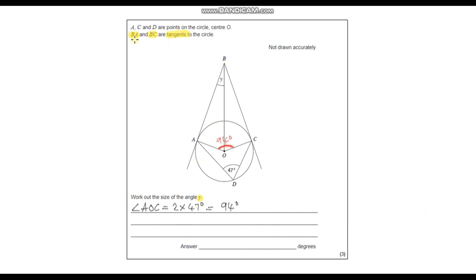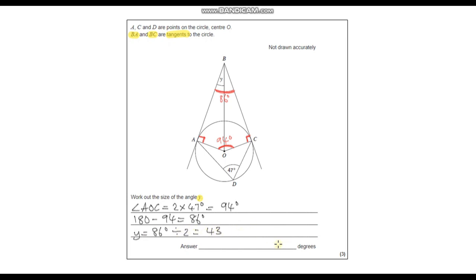We've also got two tangents — BA and BC. We know that tangents meet radii at 90 degrees, so these two angles are both 90 degrees. Now we've got three angles in this kite shape, and we can work out the final angle by subtracting from 360. These two right angles add up to 180, so the remaining two angles must also add up to 180. So 180 minus 94 degrees gives us 86 degrees. Y is just half of 86 degrees because these two angles are exactly the same, so Y equals 86 divided by 2, which is 43 degrees.